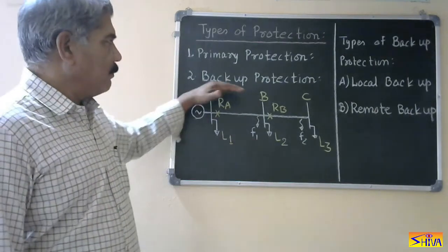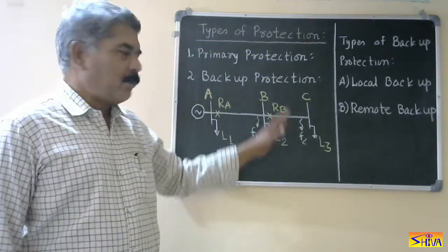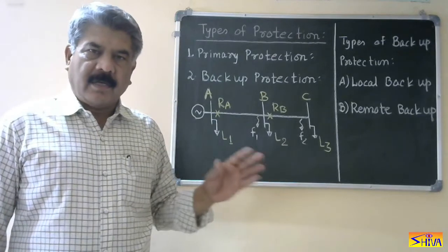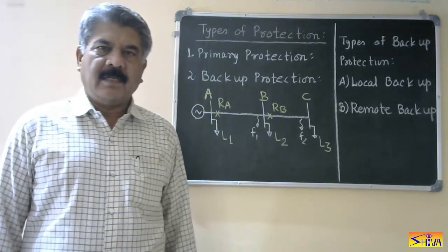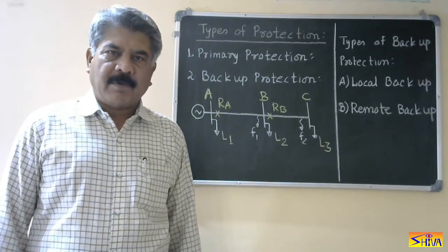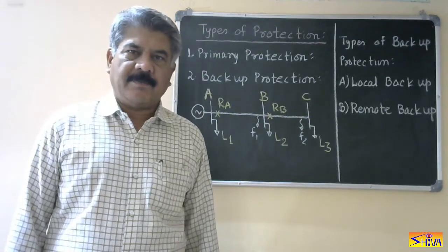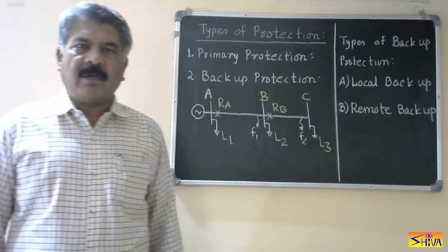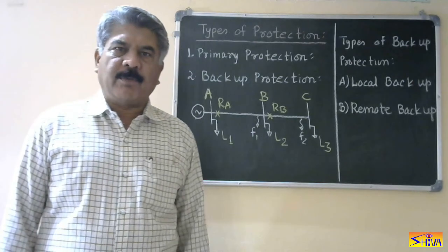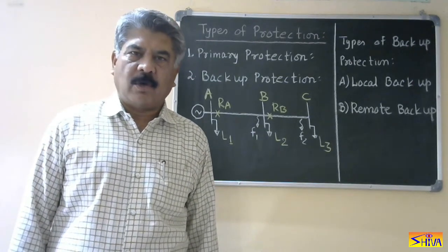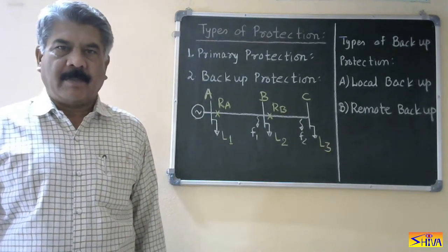Now let us see what is backup protection. When we consider the entire protection system, it consists of a relay, circuit breaker, CT, PT, trip coil, DC power supply, and the complete trip circuit. There is a probability of failure of any component, and when any component fails, the entire protection system fails to operate. So we cannot eliminate the possibility of failure of primary protection.